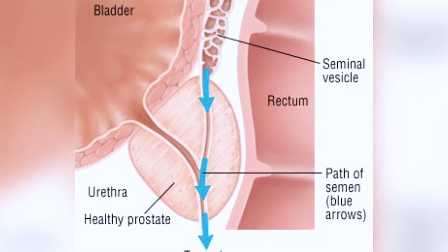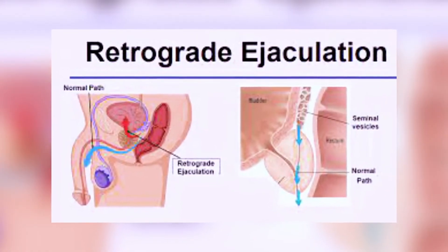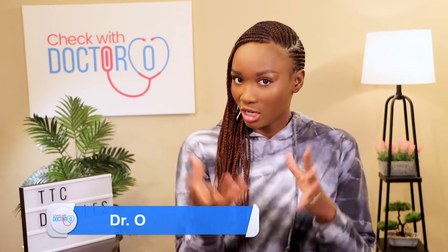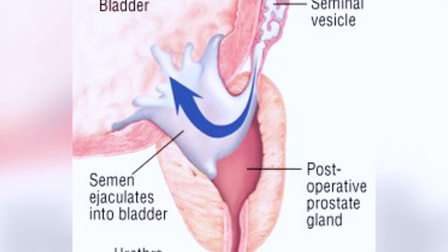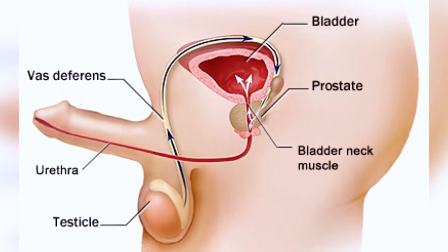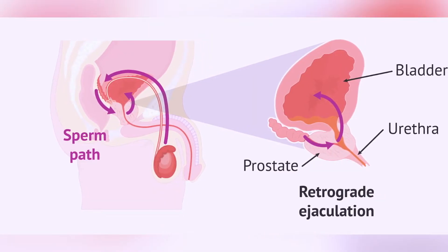In people that have retrograde ejaculation — retrograde means going backwards — instead of the ejaculate going out of their body, it's actually going back into the bladder. The sperm that is supposed to fertilize your partner's egg is going backwards into your bladder, putting you in a very difficult situation. Some causes of retrograde ejaculation include surgery to the prostate gland, surgery to your urethra, and certain types of injuries to your spine.